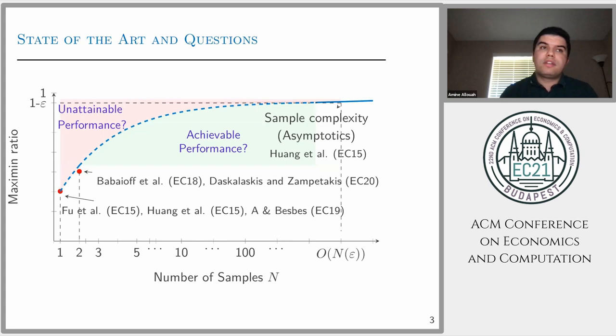So in this graph here, in the x-axis, we have the number of samples that a seller has access to but does not know the distribution. And we are wondering what is the achievable performance as a function of the number of samples.